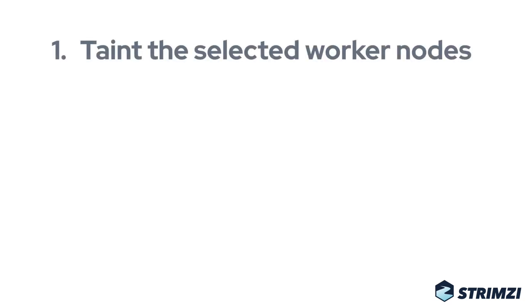So how do we set up dedicated nodes? We first have to taint the selected nodes we want to dedicate for Kafka. The taint will make sure that regular pods will not be scheduled on these nodes — only pods which are configured to tolerate this taint will be allowed to schedule there. We will also need to label these nodes with some labels, which we can later use for node affinity in the Kafka pods.